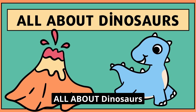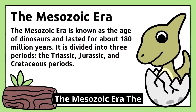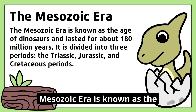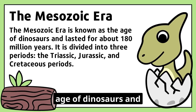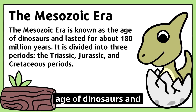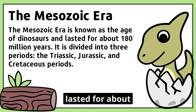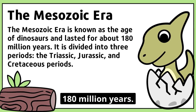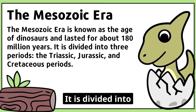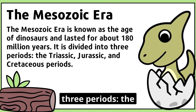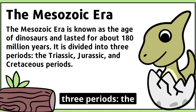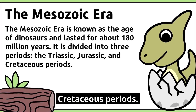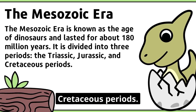All About Dinosaurs. The Mesozoic Era is known as the Age of Dinosaurs and lasted for about 180 million years. It is divided into three periods: the Triassic, Jurassic, and Cretaceous Periods.